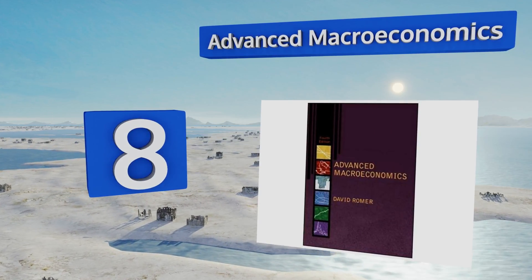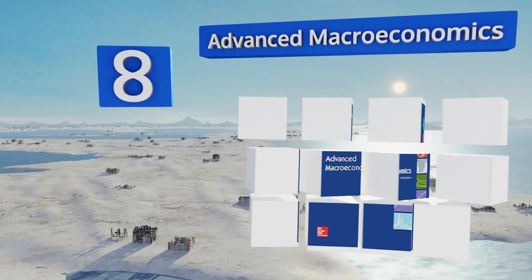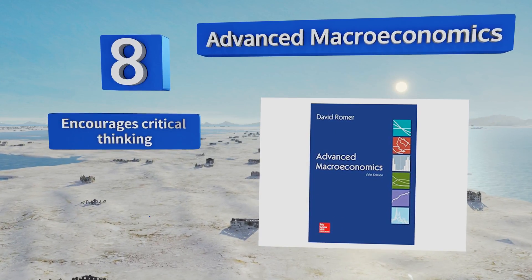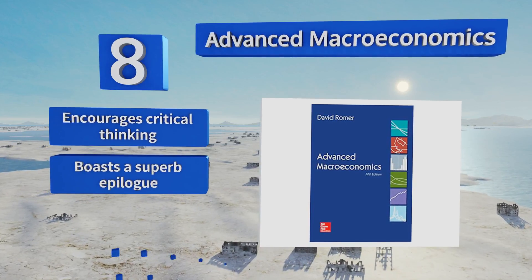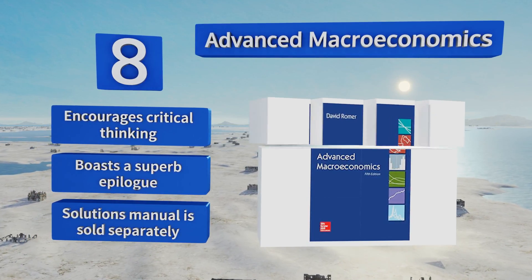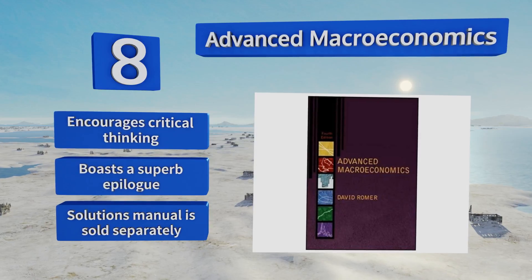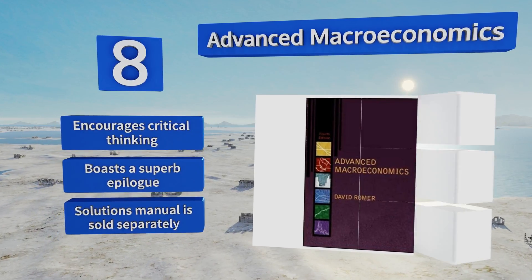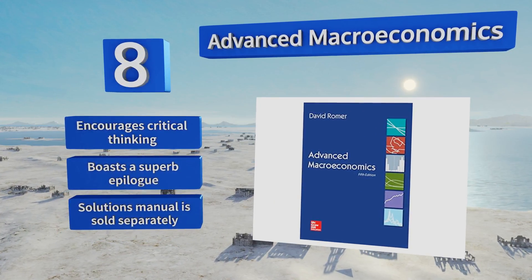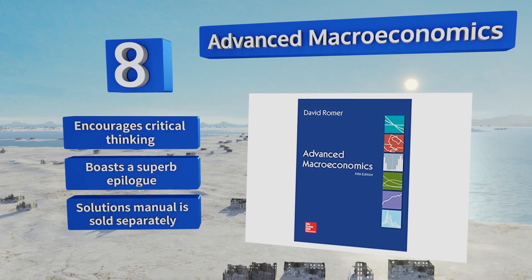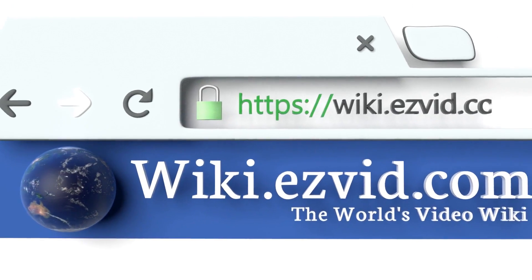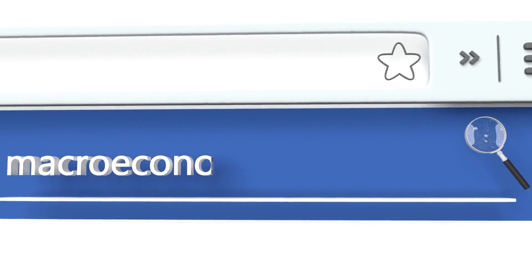Coming in at number eight on our list, Advanced Macroeconomics illustrates the rationale behind the central questions of the discipline by means of formal models and major theories. Rather than using abstract examples to reinforce data, it's supported by clarifying mathematical equations and problem sets. It encourages critical thinking and boasts a superb epilogue. Note that the solutions manual is sold separately.